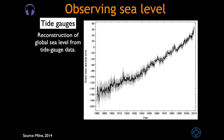This graph presents a reconstruction of global sea level from tide gauge data observations. The grey bars indicate uncertainties. The information shows a recent estimate of the global mean sea level since 1880. Most estimates indicate that the average rate of mean rise for this period has been within the range of 1 to 2 millimeters per year, with estimates for the latter half of the 20th century giving values closer to 2 millimeters per year. They also indicate a period of faster rise between approximately 1930 and 1960. This graph suggests an average rate of 1.7 millimeters per year during the 1880 to 2010 period.